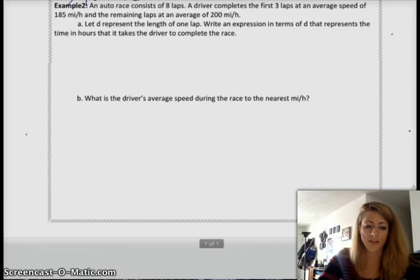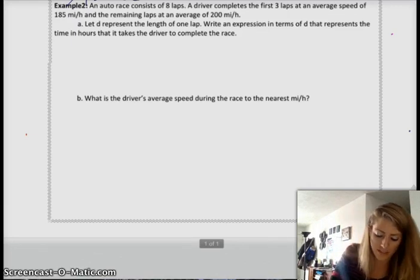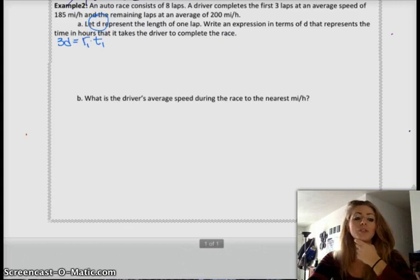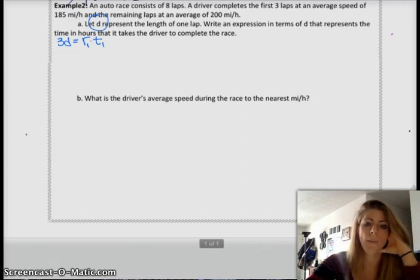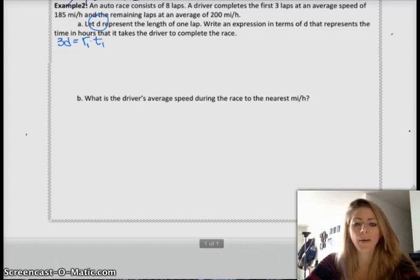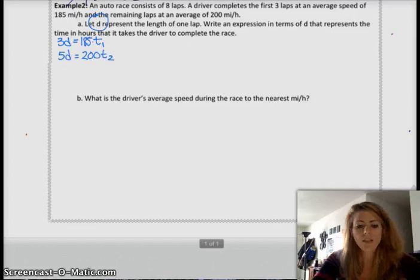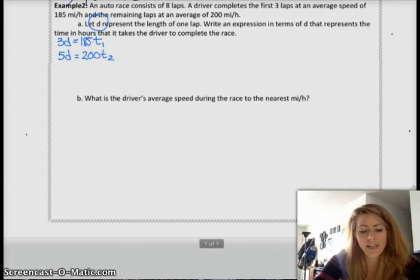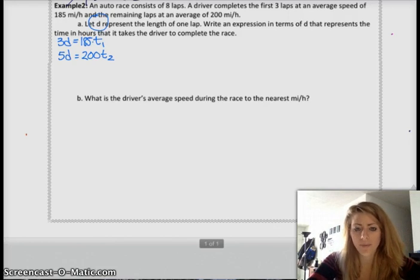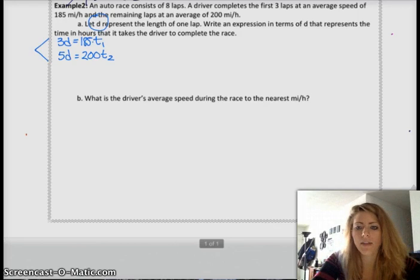So, you want to kind of set up your distance equals rate times time for the first 3 laps, and then the second 5 laps. So, for the first 3 laps, you have distance equals rate times time, but since you've let D represent the length of one lap, then you have 3D equals your rate times your time. And we do know that the first 3 laps had an average speed of 185 miles an hour. So, I'm going to replace my R sub 1, so this is like the first leg, with 185. And then I'm going to have the same, similar equation for my second leg when you take the 5 laps at 200 miles an hour.